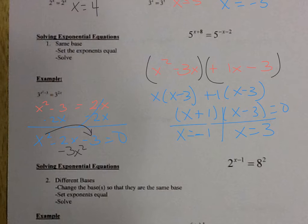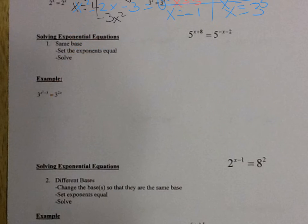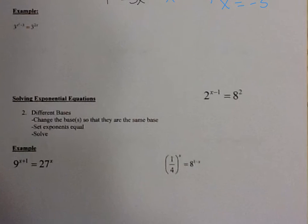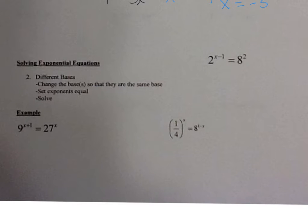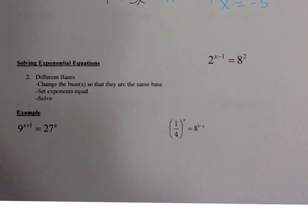Now the issue is when we have different bases. If you have the same base, it's no big deal — you set the exponents equal. But when we have different bases, you have to get the bases to be the same. You can never, ever go from a small base up to a large base. Take a look at this: I have 2 to the x minus 1 equals 8 squared. You never want to take your small base and bring it up to a large base. You can only take your big base and bring it down.